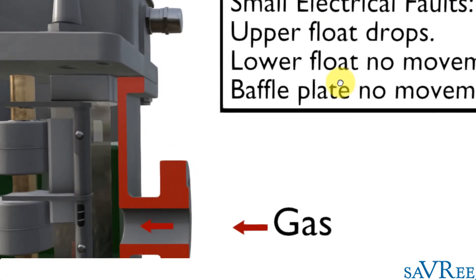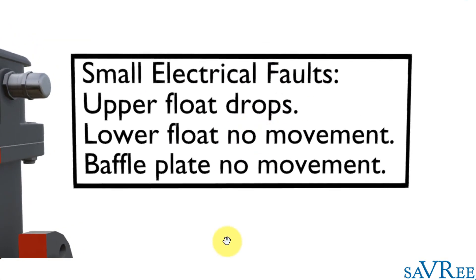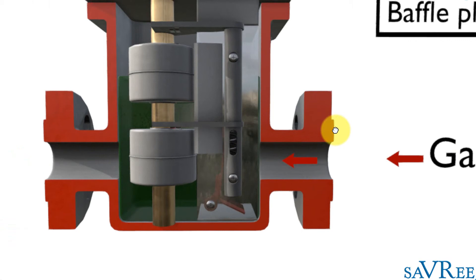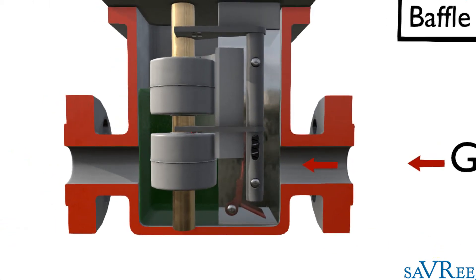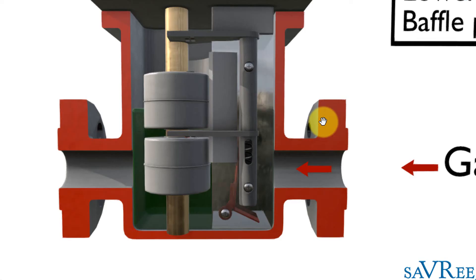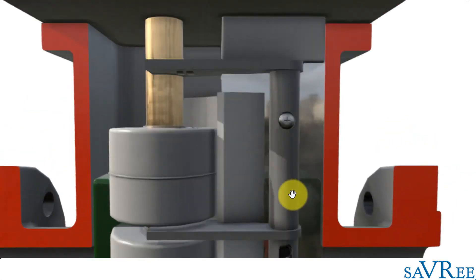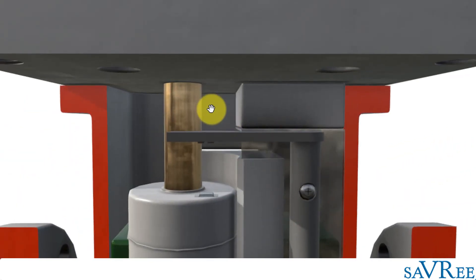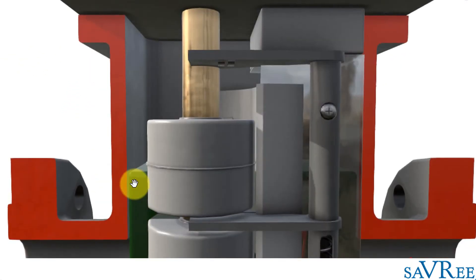Now we've got small electrical faults. Upper float drops, lower float no movement, baffle plate no movement. The baffle plate hasn't moved because the lower float has dropped. And the reason it's dropped is because the gas has been slowly trickling in. This small electrical fault, maybe winding to winding, has slowly over time just kept trickling gas in. As the gas has kept trickling in, it's built up within the chamber until it's displaced the liquid. And as the liquid's been displaced, the float has dropped down because the float is buoyant.